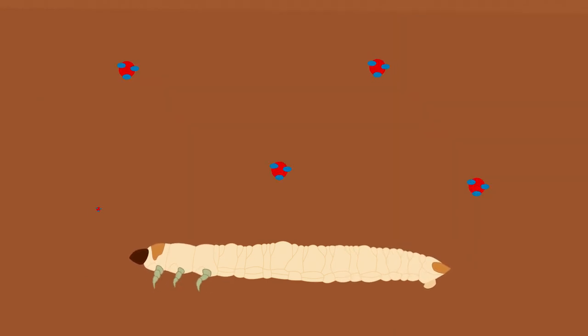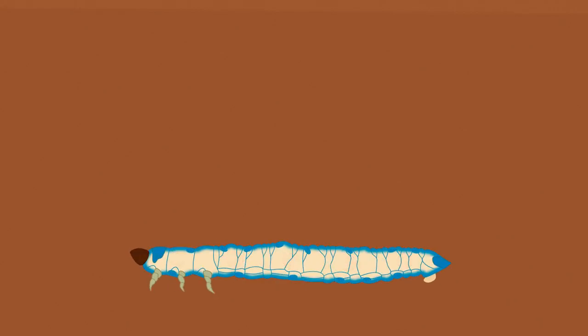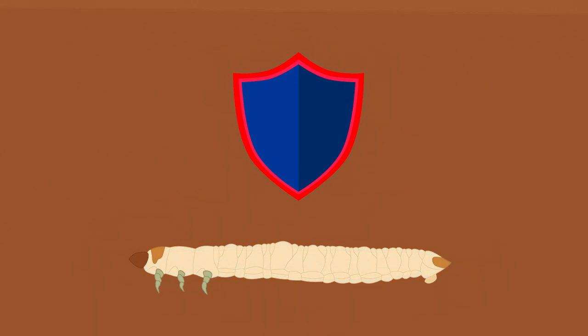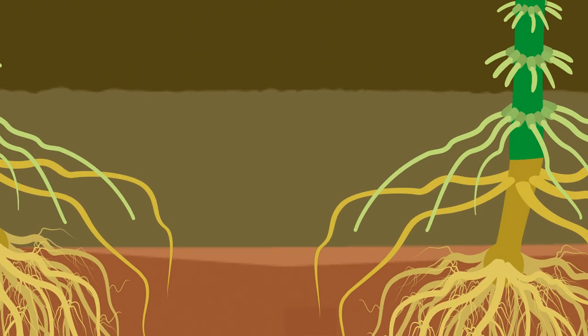It even allows the larvae to obtain benzoxyzinoids, which are toxic to other insects, and use them for self-defense. The western corn rootworm is a difficult but fascinating pest.